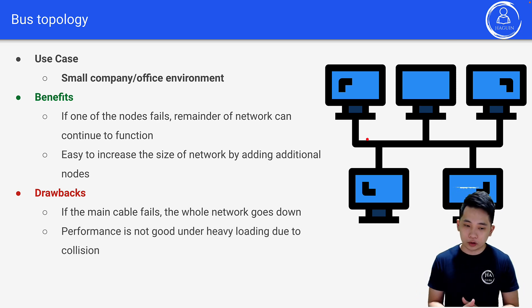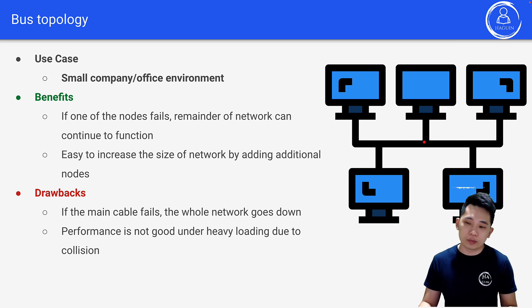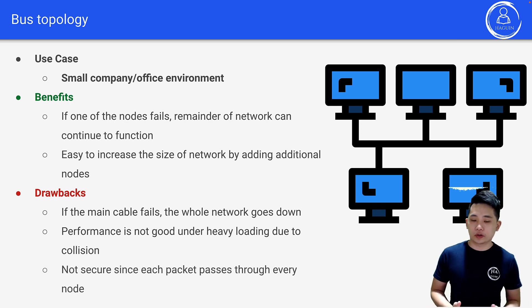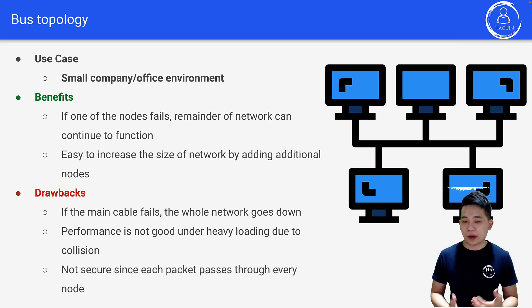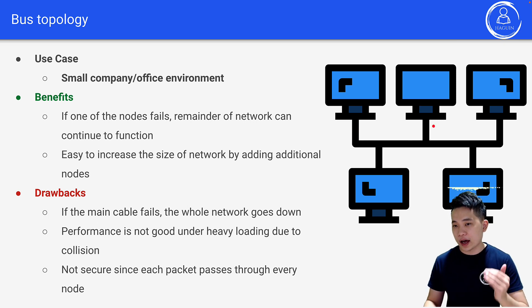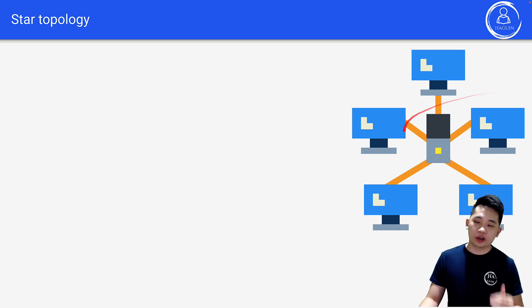Performance is not good under heavy loading due to collisions, since messages are sent through the same wire. Bus topology is also not as secure, since each packet passes through every node until it actually reaches the right node.